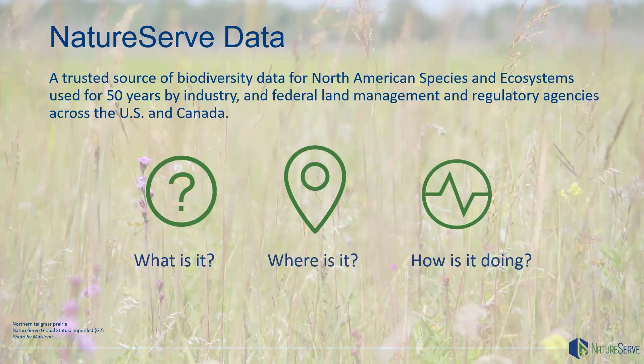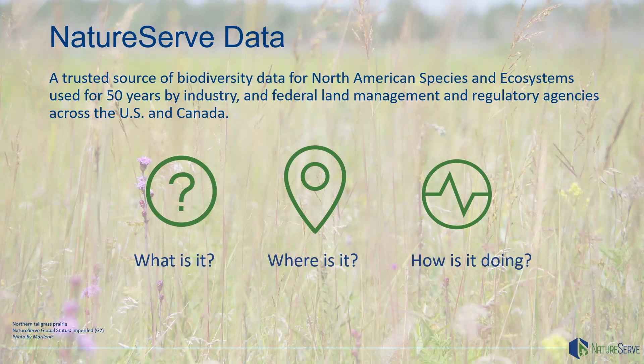When people need access to information on North American species and ecosystems, NatureServe is here to fill that need. Our data fall into three broad categories. What is it? We track species taxonomy and work to classify ecosystem types to provide a common framework and language for conservation. Where is it? Working with our partners, we provide aggregated information on documented locations of at-risk species. We also generate derived data products, including species habitat and ecosystem maps.